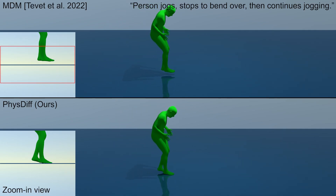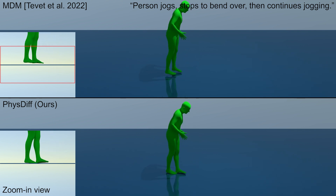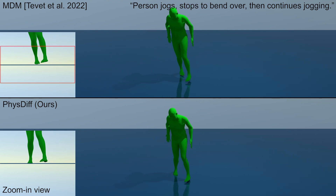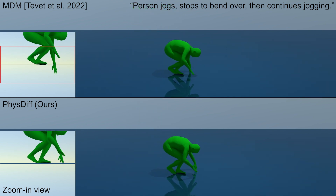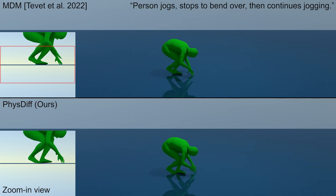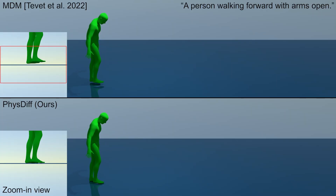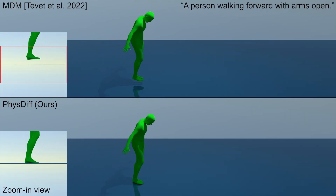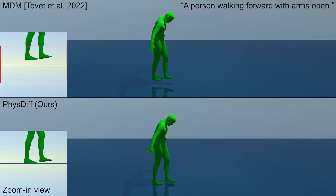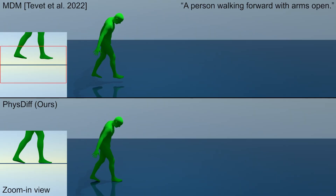Here we compare our model, PhysDiff, with the state-of-the-art motion diffusion model, MDM. We can see that MDM has artifacts such as floating, foot sliding, and ground penetration, as highlighted in the red box. In contrast, PhysDiff does not have these artifacts and generates motions that are more grounded and realistic.